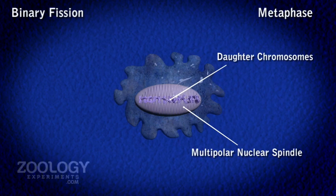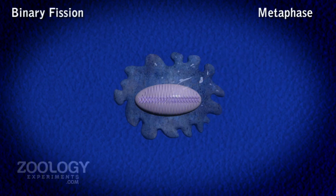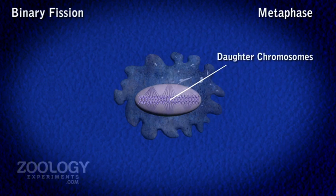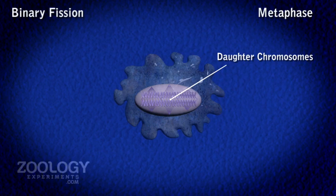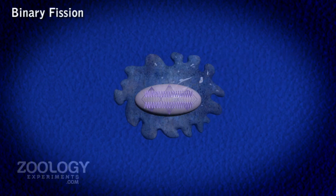Each chromosome splits longitudinally and becomes paired. Daughter chromosomes on each side become attached to the spindle fibers arising from multiple poles, which are situated within the nuclear membrane.